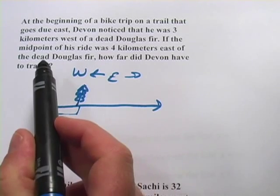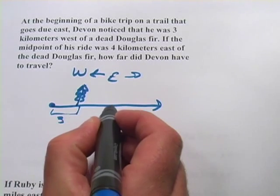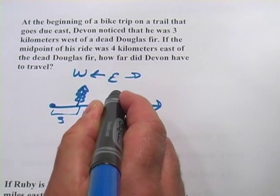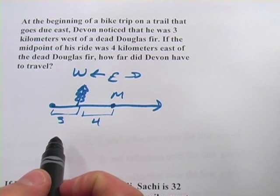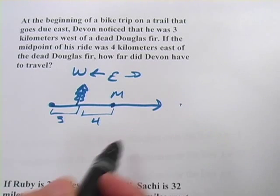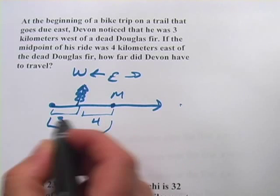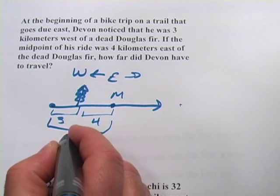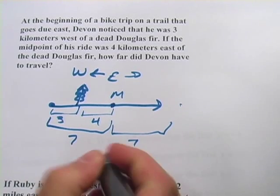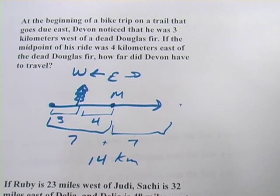Then it says, if the midpoint of his ride was four kilometers east of the dead Douglas fir — so another four kilometers east is the midpoint of the ride. How far did Devin have to travel? If this is the midpoint, his endpoint is somewhere out here. We know the distance from the beginning to the midpoint is seven kilometers. Since that's to the midpoint, he's going to go another seven to get to the end.